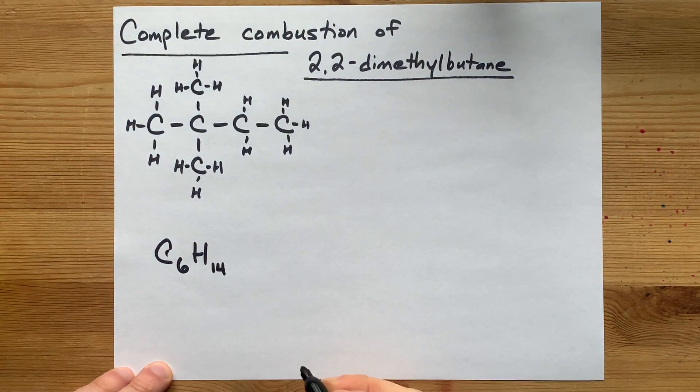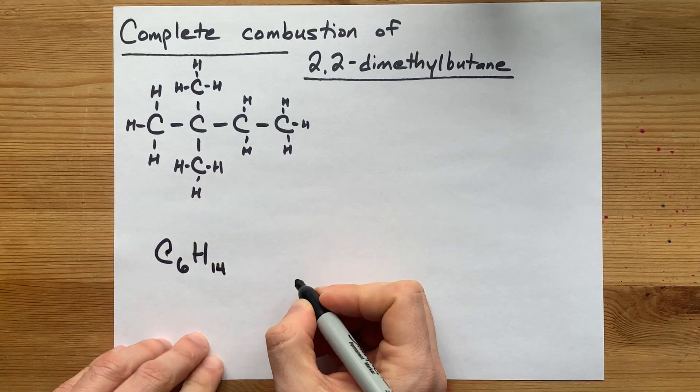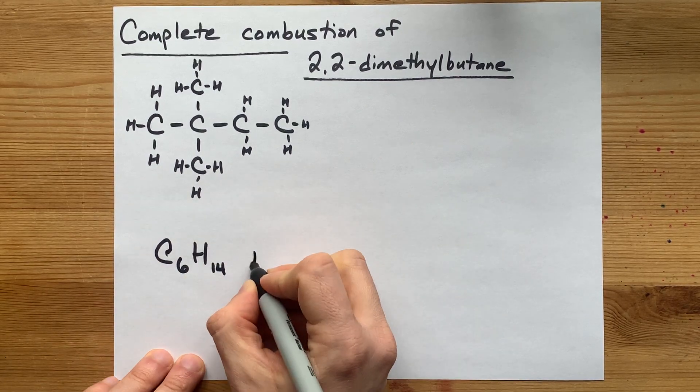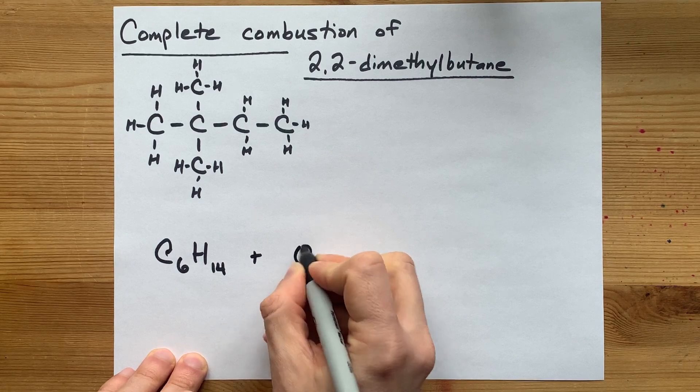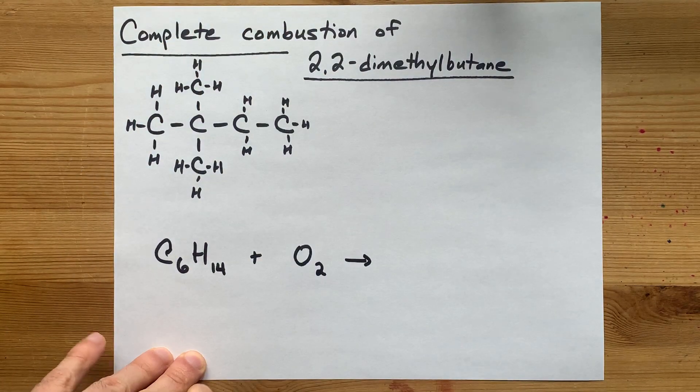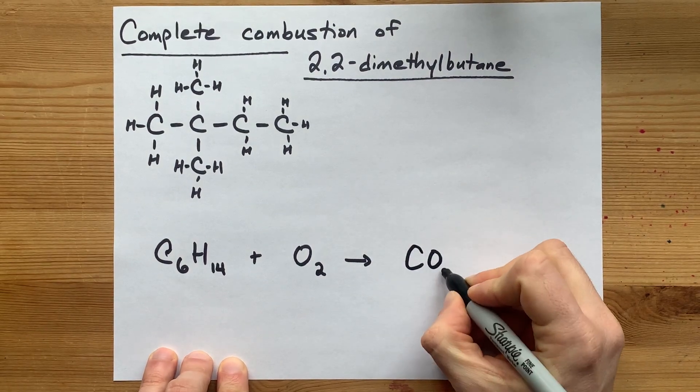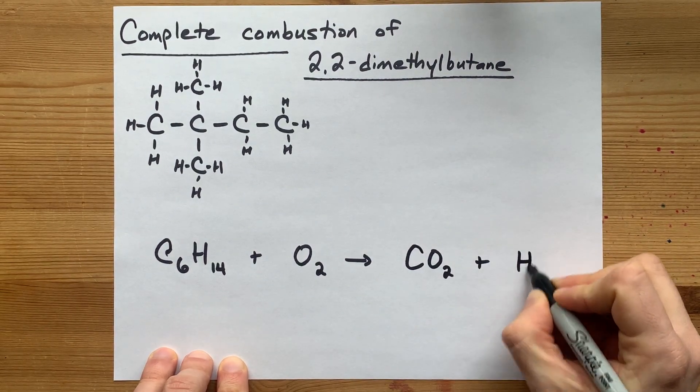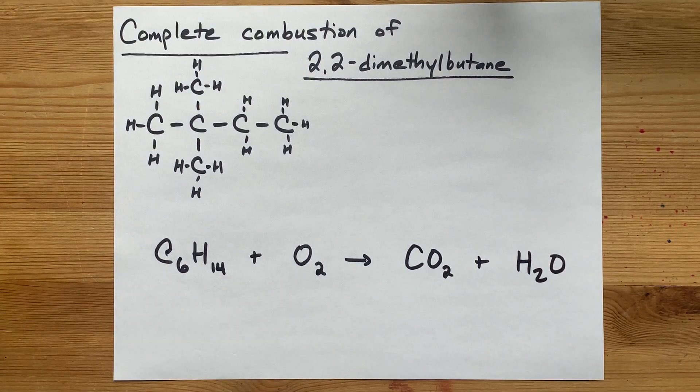C6H14 is the formula for 2,2-dimethylbutane. Oof, I botched that, but whatever. Combustion is when you react it with gas phase oxygen, and complete combustion is when the product is only carbon dioxide and water. All right, let's get it.